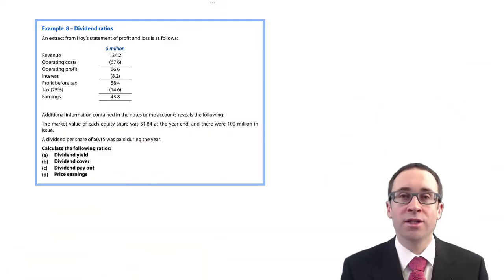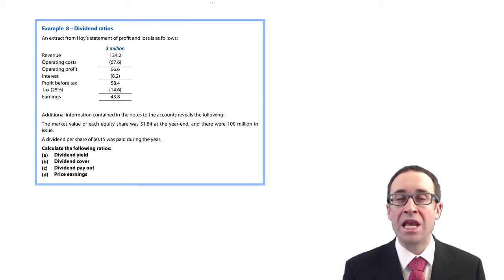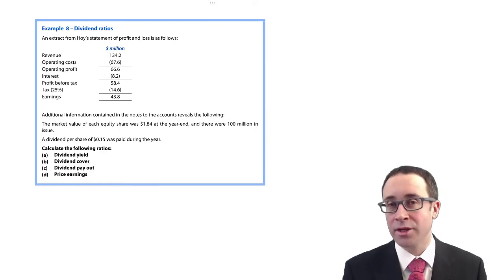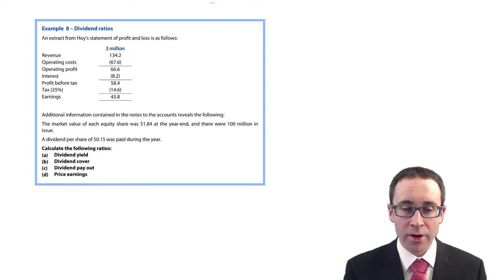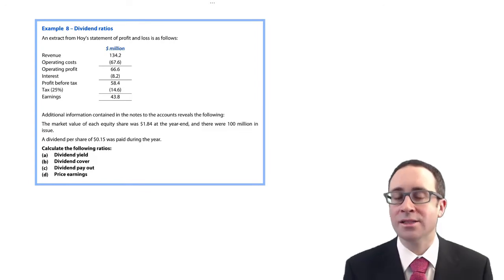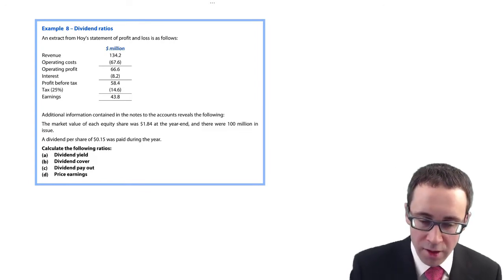So let's finish off our section looking at investor ratios by looking at some ratios linked to our dividends. So the question there, entitled Dividend Ratios, all about a company called Hoy, starts asking us for four ratios, three of which are related to dividends. The fourth one clearly isn't.